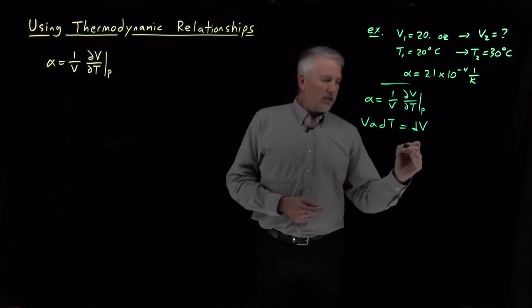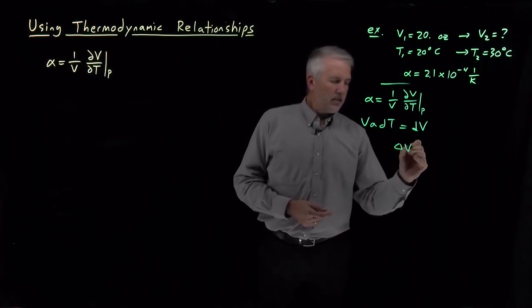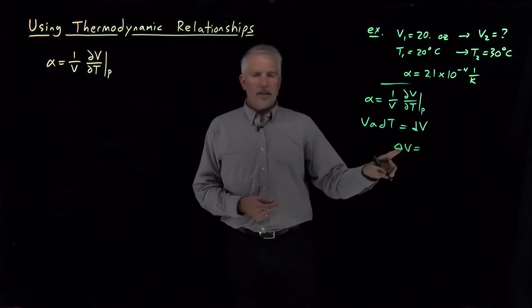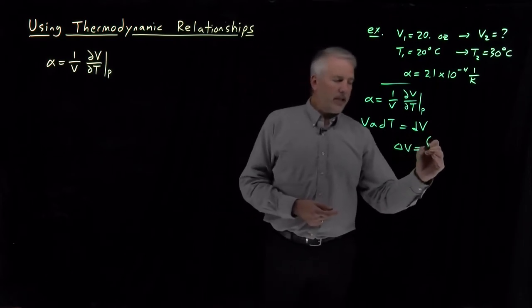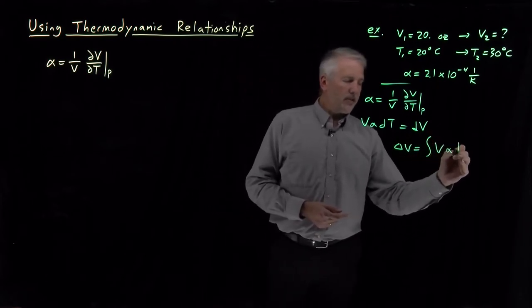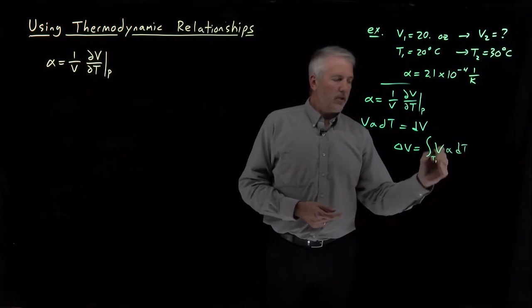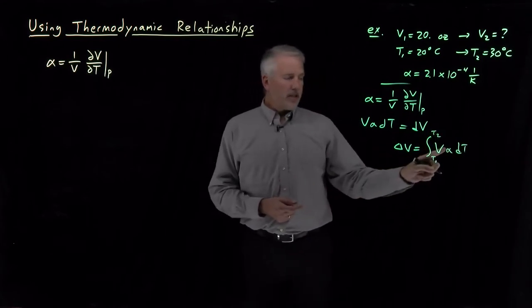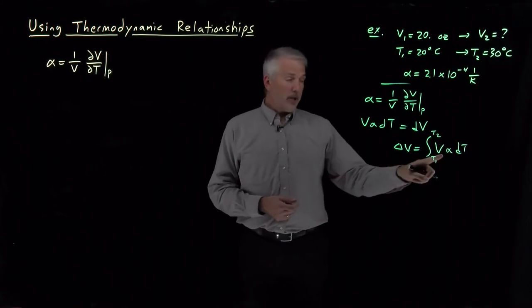If I integrate dV to get delta V, the change in volume is going to be the integral of V alpha dT. So from T1 to T2, integrate V times alpha times dT. So how do I do that integral?